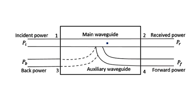Ideally, the power from the third port is 0. The same case applies in reverse direction also — if port 2 is acting as input, ports 1 and 3 are benefited but not port 4. This is because it has a bidirectional property.